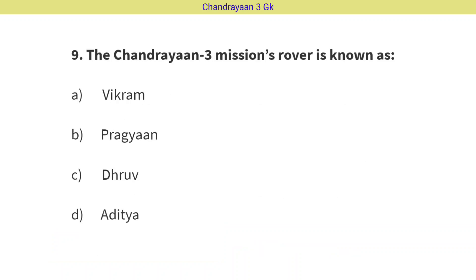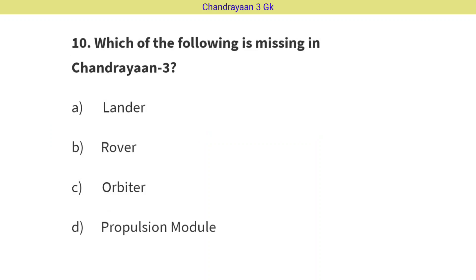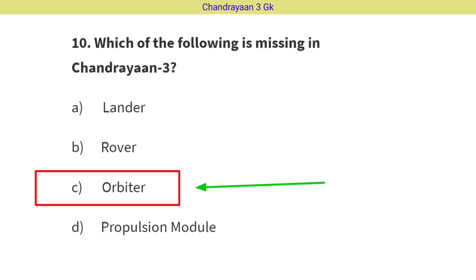Question No. 9: The Chandrayaan-3 mission rover is known as? The correct answer is Option B, i.e. Pragyan. Question No. 10: Which of the following is missing in Chandrayaan-3? The correct answer is Option C, i.e. Orbiter.